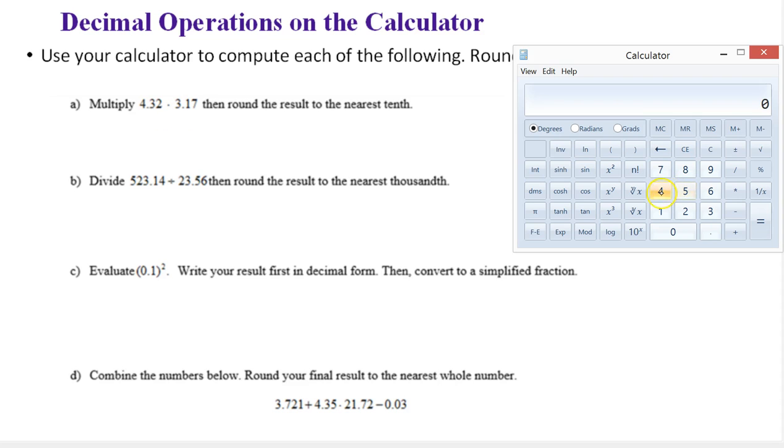So 4.32, the asterisk is the multiplying button. Notice it's recording what I have up here, 3.17. And here's the result.